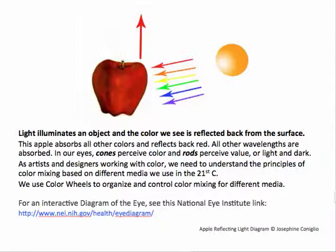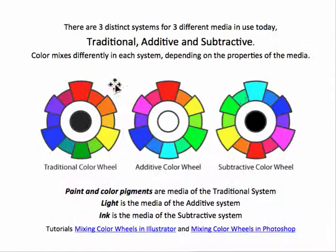Here's the sun — it shines light. All of the wavelengths of light are being reflected because sunlight has pure light, all the wavelengths. All the colors are absorbed except the red color that reflects back to us.